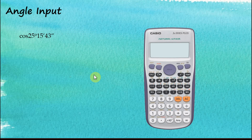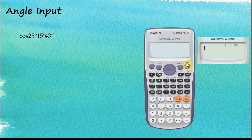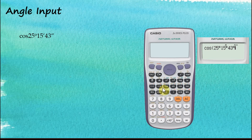Let's see how to input angles with different units in our calculator, starting with degrees. By default the unit is set to degree. If the unit is degree and we want to key in degrees, it's very straightforward. For example: cos(25° 15' 43") — we use these buttons to key in degrees, minutes, and seconds, then close brackets and press equal.